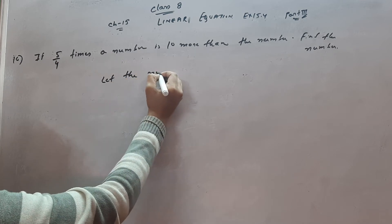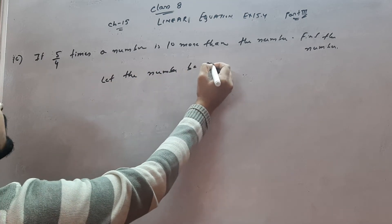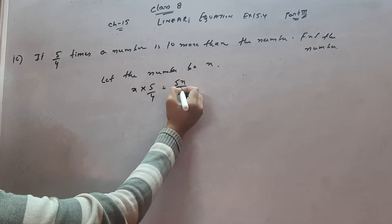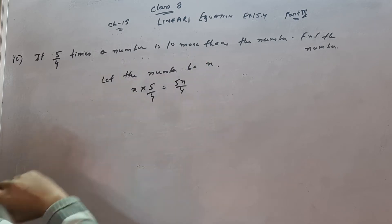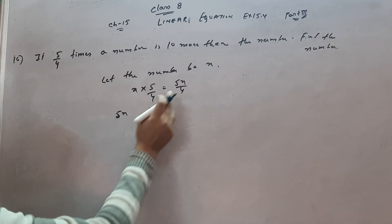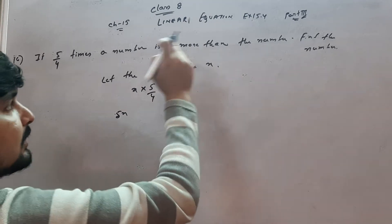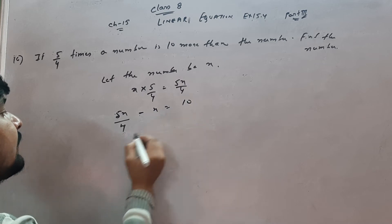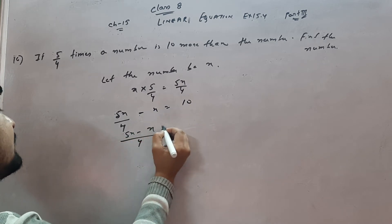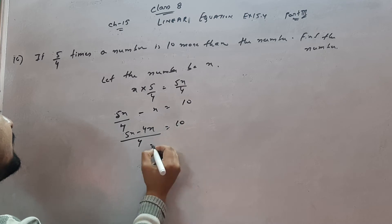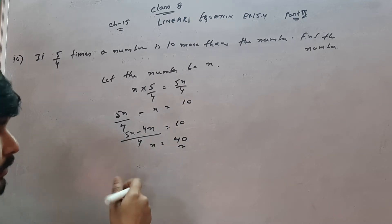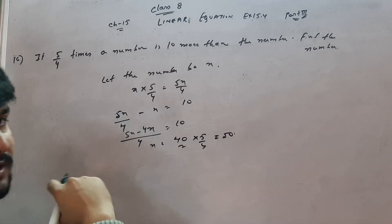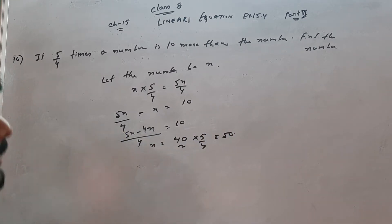Let the number be x. Then 5/4 times x is 5x/4. The difference between 5x/4 and x is 10. So: 5x/4 minus x = 10, which gives (5x minus 4x)/4 = 10, so x = 40. Verification: 5/4 of 40 is 50, which is indeed 10 more than 40. Clear — note kar lijiye.